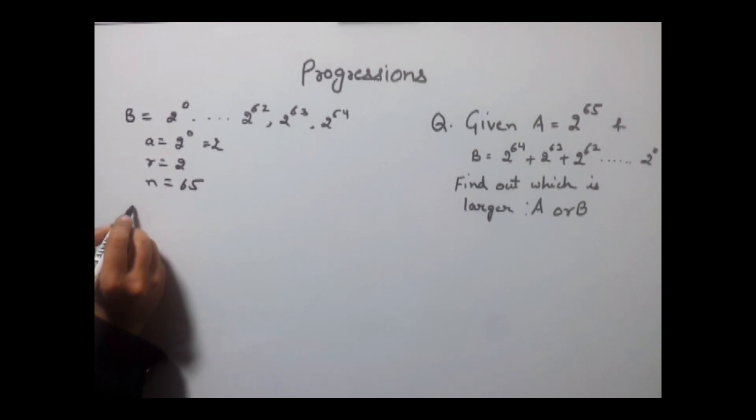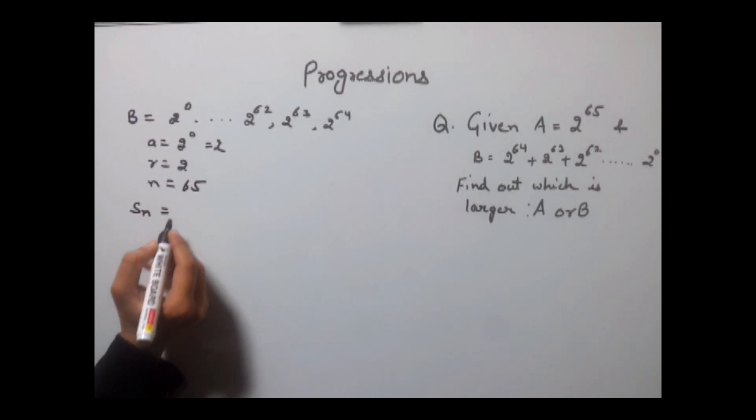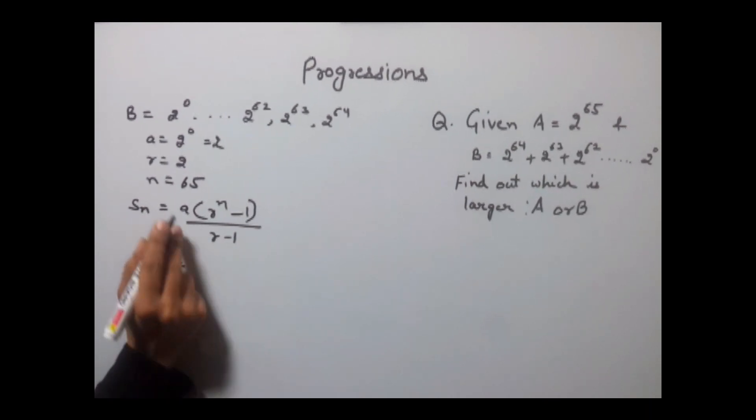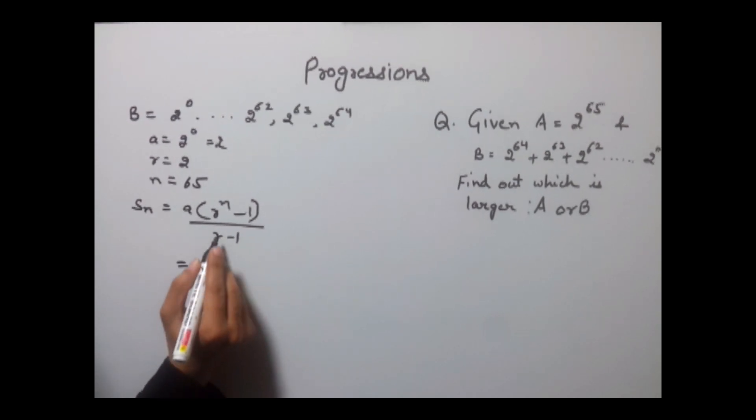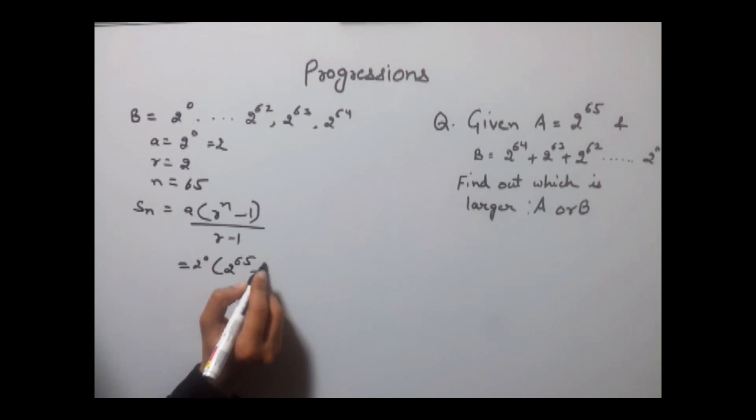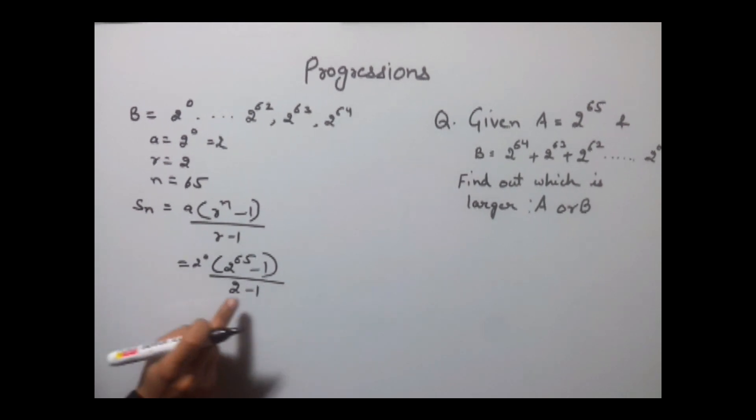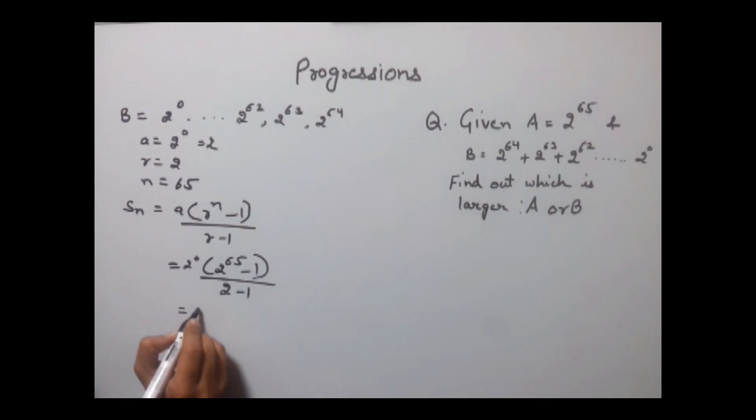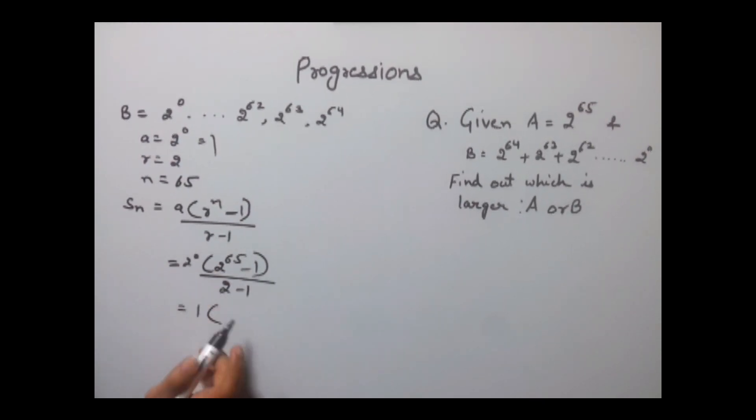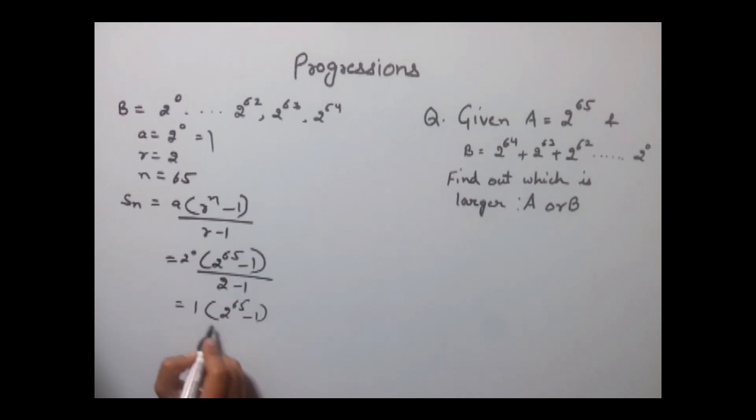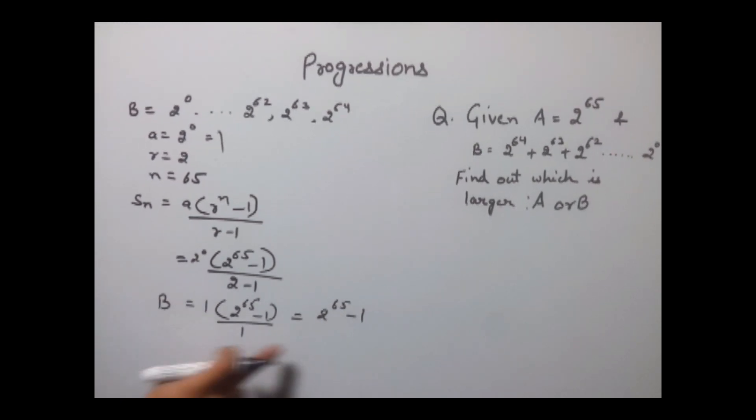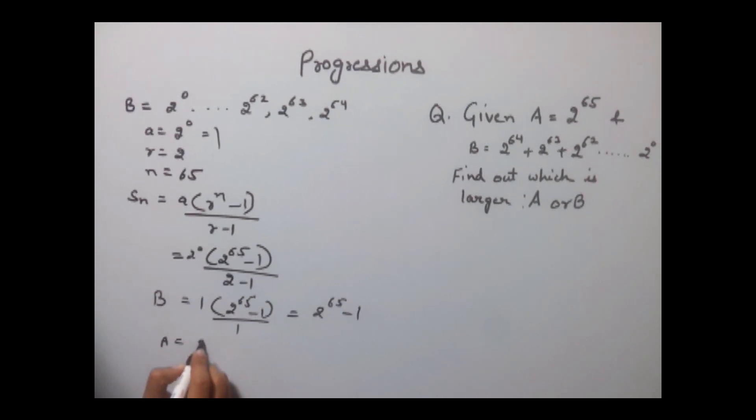Now using the formula of summation of the terms: A into r to the power n minus 1 upon r minus 1. Value of A is 2 to the power 0 into r to the power n - value of r is 2 to 65 minus 1 upon r is 2 minus 1. 2 to the power 0 gives us 1. This is also 1. 2 to the power 65 minus 1 upon 1, which gives us 2 to the power 65 minus 1, the value of B. And we know value of A is 2 to the power 65.